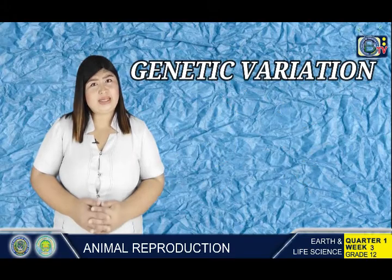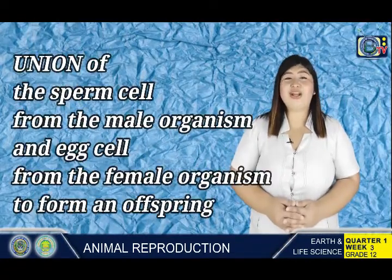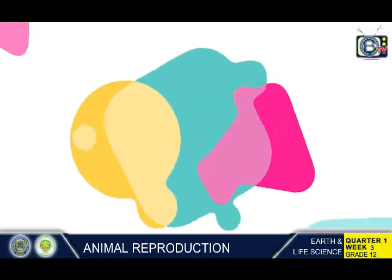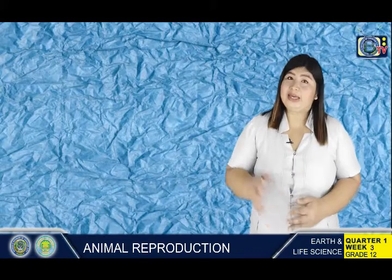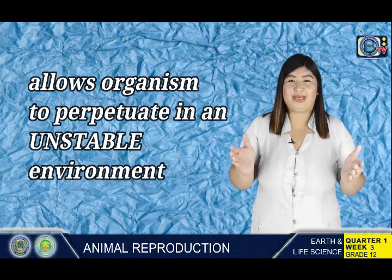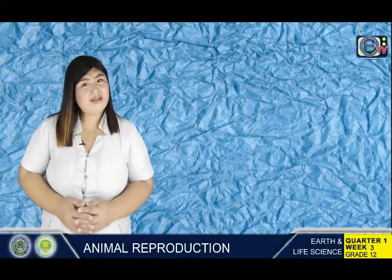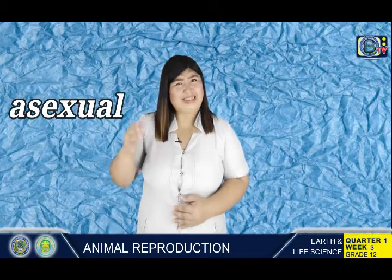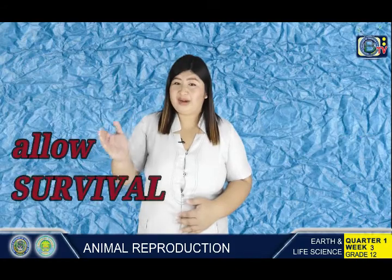Genetic variation refers to the differences of individuals in a certain population. This happens through the combination of the sperm and egg cell from the male and the female organism to form an offspring. Both sperm and egg cells have different genetic characteristics, so when combined they create more genetic variation in the individual formed. This allows organisms to survive in an unstable environment where factors such as disease can decrease the survival rate of the population, since it will not be the whole population that goes extinct. Overall, both asexual and sexual reproduction work in lower and higher forms of animal species to allow survival and prevent extinction.